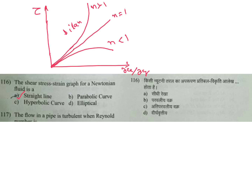On the graph, dilatant is above the Newtonian line, pseudoplastic is below, and Newtonian is the straight line. Sometimes N value is also asked, so remember: for dilatant N is greater than 1, for pseudoplastic N is less than 1, and N equal to 1 for Newtonian fluid — straight line.